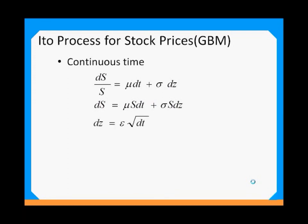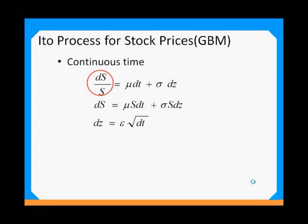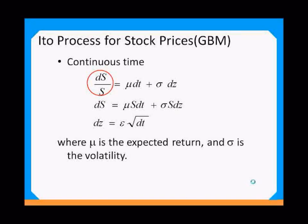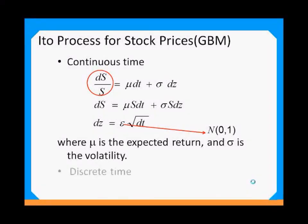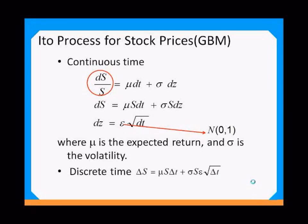So dS/S is nothing but the stock return — the change in stock price divided by the stock price. The stock return is a function of two things: μ, the expected return, and σ, the volatility. The epsilon term is simply a normal random number — a z-value randomly picked from a standard normal distribution N(0,1). In discrete time, the Ito process is expressed as: ΔS = μS Δt + σS ε √(Δt).